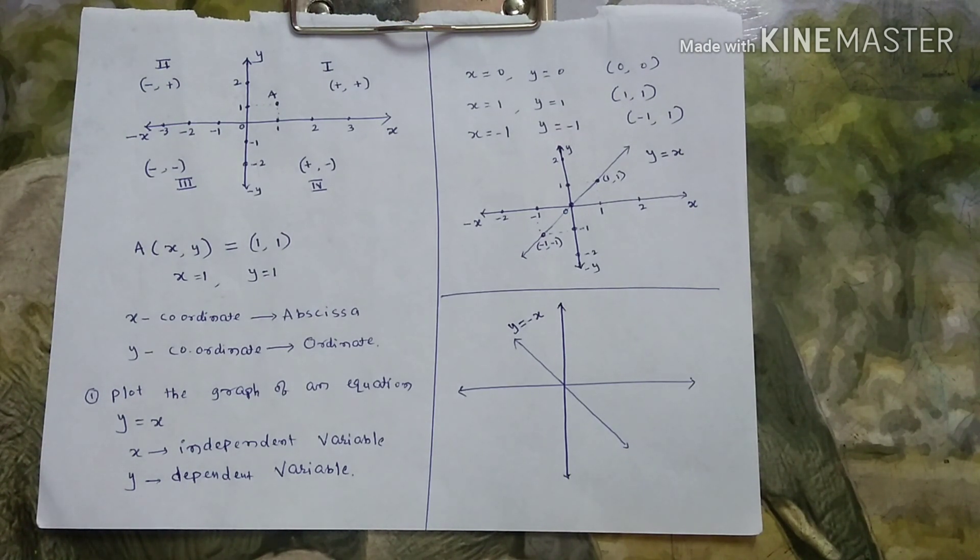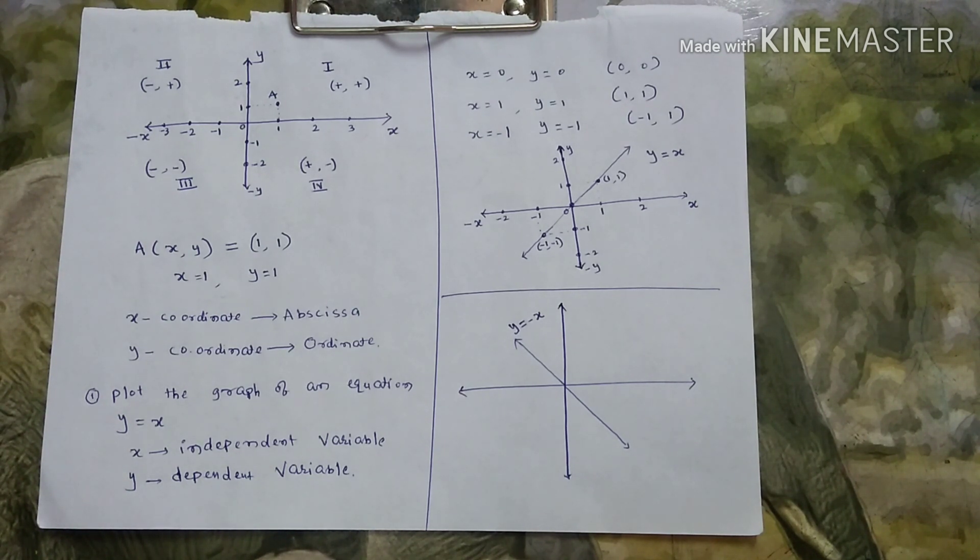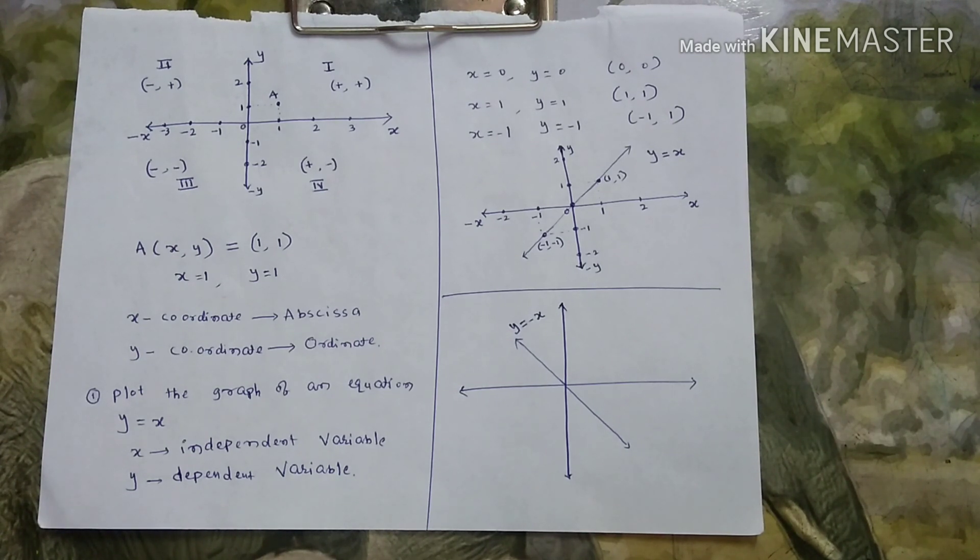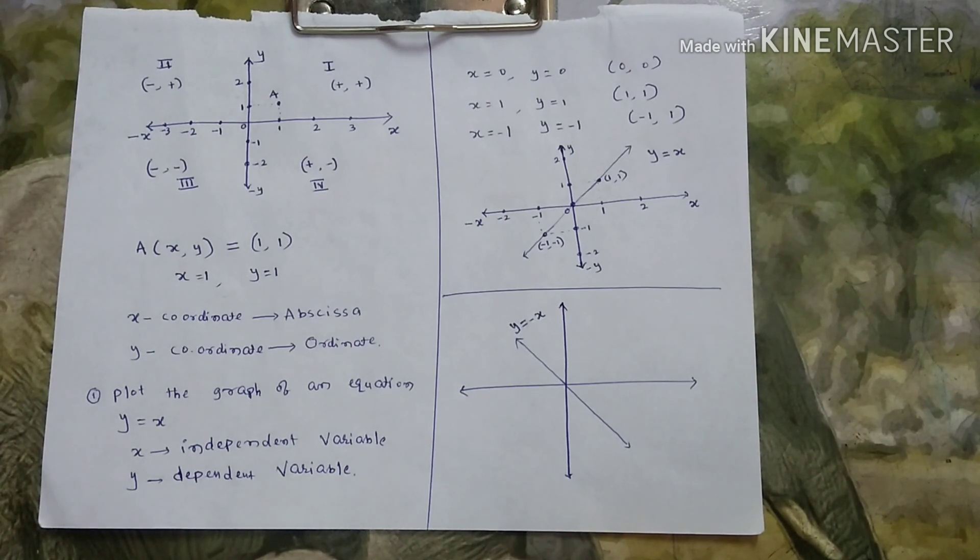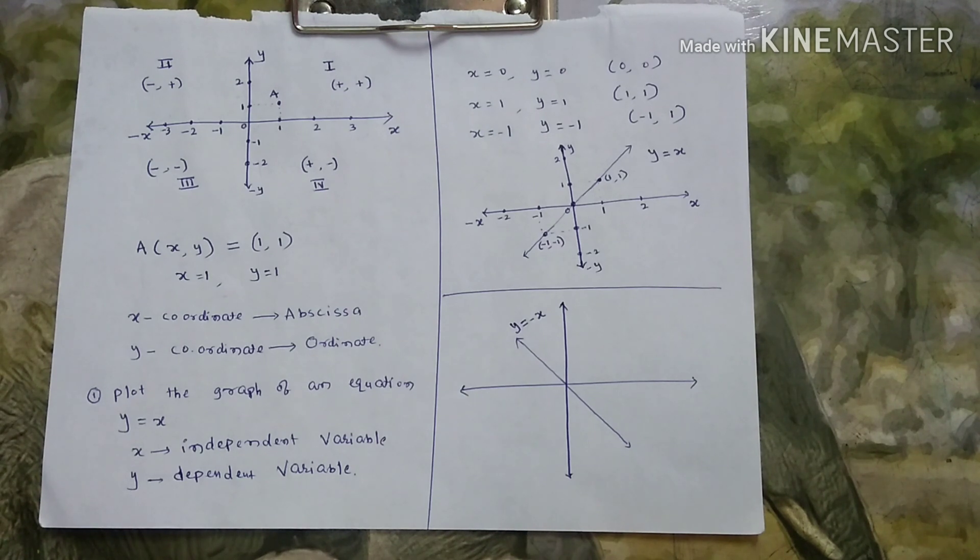You will get graph like this. Students, you understand what is coordinate system? What is two-dimensional coordinate system? What is x-axis, x-coordinate, y-axis, y-coordinate? And how many quadrants are there? I hope you understand the basic idea of coordinate system. Okay, students? If you like this video, please like it, share it and subscribe it.